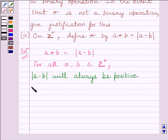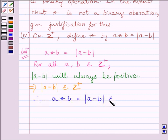Now this implies, modulus of A minus B will belong to set of positive integers. As modulus of A minus B will always be positive, so it will always belong to set of positive integers. Therefore, A star B is equal to modulus of A minus B belongs to set of positive integers.